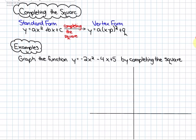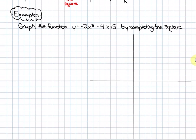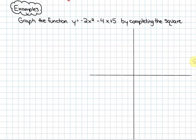We're going to look at this first example, which says graph the function y equals negative 2x squared minus 4x plus 5 by completing the square. So here is the process of completing the square.